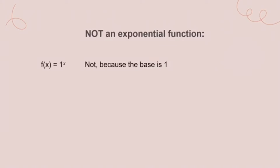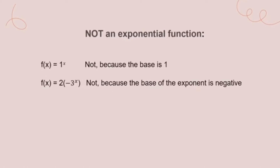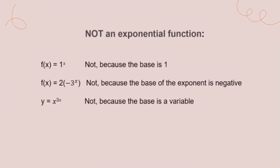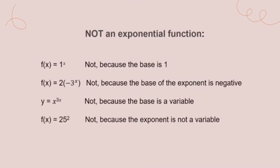Let us observe these equations and determine why these are not exponential functions. f(x) = 1^x is not an exponential function because the base is 1. f(x) = 2 · (−3)^x is not an exponential function because the base is negative. y = x^(3x) is not an exponential function because the base is a variable. And f(x) = 25² is not an exponential function because the exponent is not a variable.